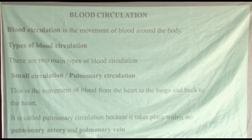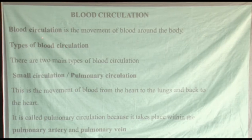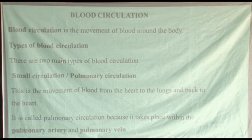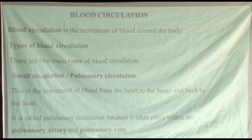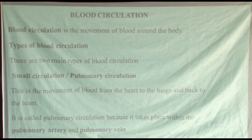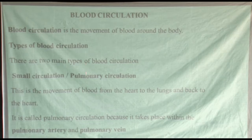So last time we talked about the circulatory system — all the transportation of different substances in the body. But for this time, we are looking specifically at blood: how blood is transported from different body parts to other body parts. This is blood circulation — the movement of blood from one body part to another. There are two types of blood circulation. The first is small circulation, also called pulmonary circulation, where blood moves along the pulmonary vein and the pulmonary artery.